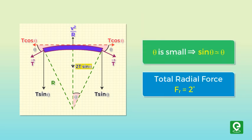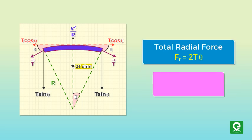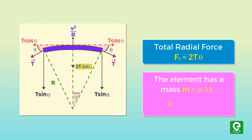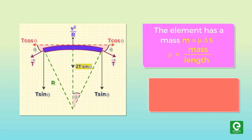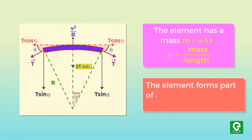The element has a mass m equal to μ times delta s, where μ is the mass per unit length. Since the element forms part of a circle and subtends an angle 2 theta at the center, delta s equals r times 2 theta.